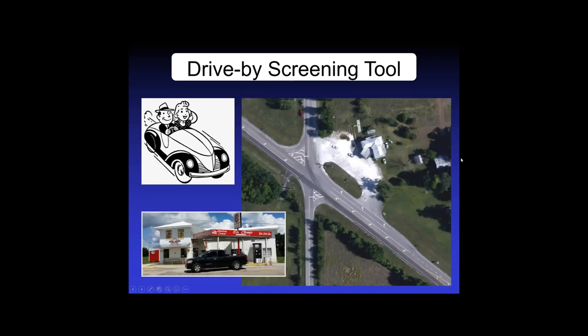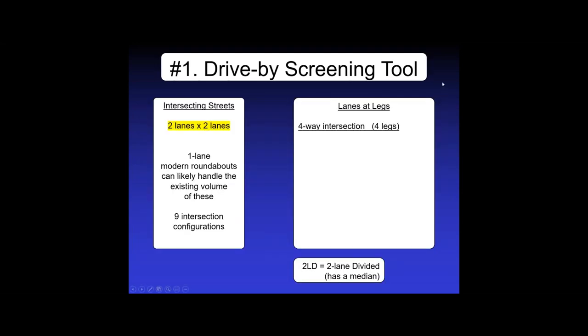Here's an intersection in Florida with an old-time gas station in the lower-left photograph. As you're driving by, you put eyeballs on it — you want to see not how many lanes are at the intersection, but how many lanes these streets are. Both of these streets are two-lane streets. You have to look back a little bit from the intersection to get away from those extra turn lanes and sometimes extra through lanes that you frequently find at intersections.